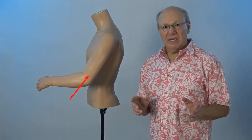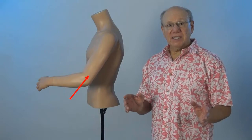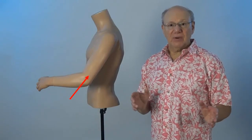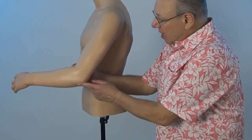To locate Large Intestine 11, bend your left elbow to 90 degrees. Large Intestine 11 is found on the idle side of your arm, halfway between the center of the elbow crease and the tip of your elbow.